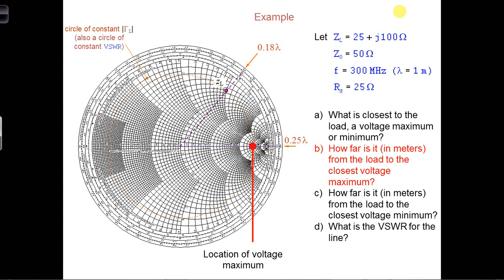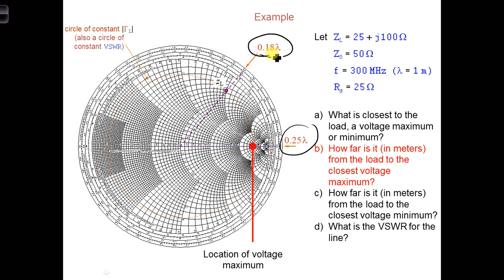Using the wavelengths towards the generator scale, the distance to the voltage maximum is read off that scale: 0.25 lambda at this location and 0.18 lambda at that location. So we subtract the two — 0.25 lambda minus 0.18 lambda — and we get 0.07 lambda.